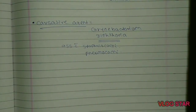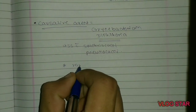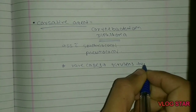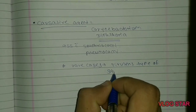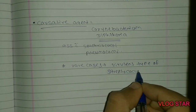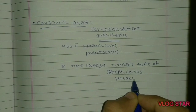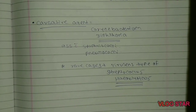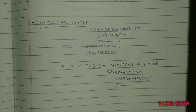But in some cases, the virulent type of Streptococcus haemolyticus can also cause Membranous Conjunctivitis. Now, in which modes does the infection occur? That is, how does Corynebacterium diphtheriae enter into the human organism and cause Membranous Conjunctivitis?